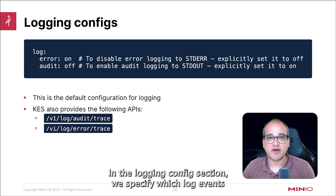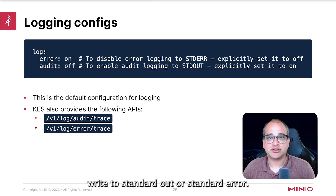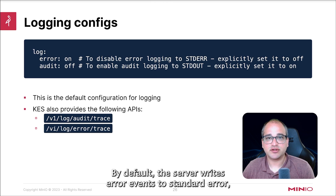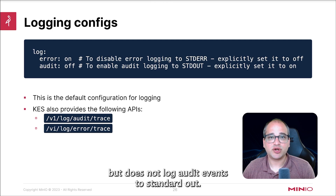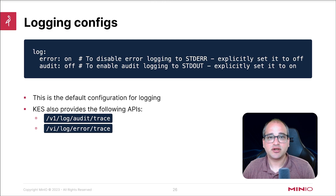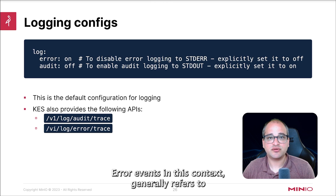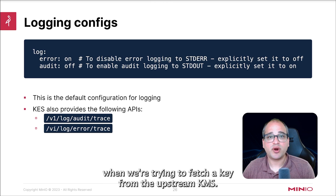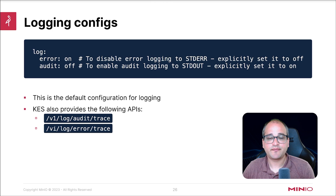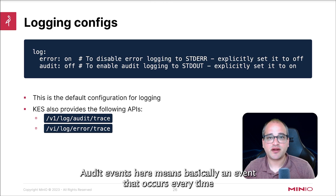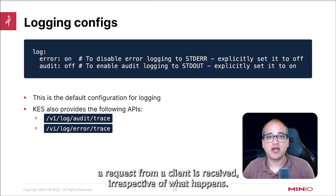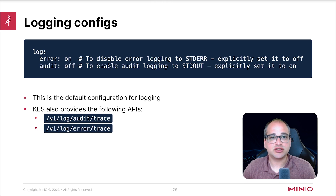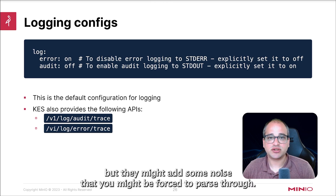In the logging config section, we specify which log events write to standard out or standard error. The KES server distinguishes error and audit log events. By default, the server writes error events to standard error but does not log audit events to standard out. Error events generally refer to an exception being thrown or some unexpected behavior, for instance a timeout when trying to fetch a key from the upstream KMS. Audit events means basically an event that occurs every time a request from a client is received, irrespective of what happens. Audit events will give a lot more information in the logs, but they might add some noise that you might be forced to parse through.